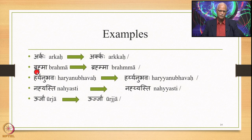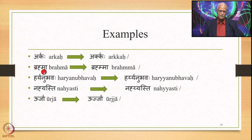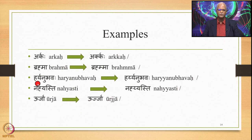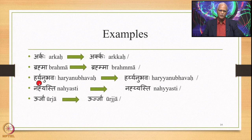In Brahma, H is also followed by Ma, which is a Yar. So this Yar gets substituted by its twice occurrence, and the output after application of 8.446 is Brahma — there are two Makharas. Similarly Haryanubhavah: A after Ha is Ach, followed by Ra, followed by Ya which is a Yar. Therefore one Ya is substituted by two utterances, giving Haryanubhavah.